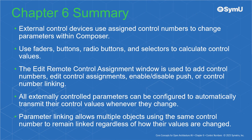To summarize this chapter: external control devices use assigned control numbers to change parameters within Composer. Use faders, buttons, radio buttons, and selectors to calculate control values. The Edit Remote Control Assignment window is used to add control numbers, edit control assignments, enable or disable push, or control number linking. All externally controlled parameters can be configured to automatically transmit their control values whenever they change. And finally, parameter linking allows multiple objects using the same control number to remain linked, regardless of how their values are changed.